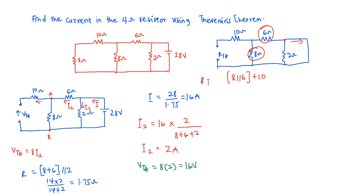We are going to have RTH equal to (8 × 6) divided by (8 + 6), plus 10, which gives us a value of 13.428 ohms. So that will be our RTH.